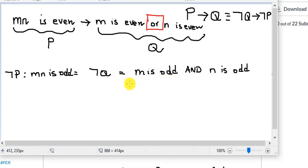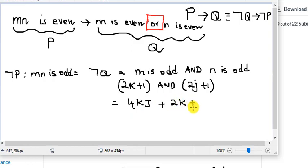So if for M to be odd, what does it mean? For some K, 2 times K plus 1 is odd. And an odd number, right? 2J plus 1 is also odd for N, isn't it? So this times, when you do a times of this, what does it mean? We have 4KJ plus 2K plus 2J, if you expand, you will know this, plus 1.